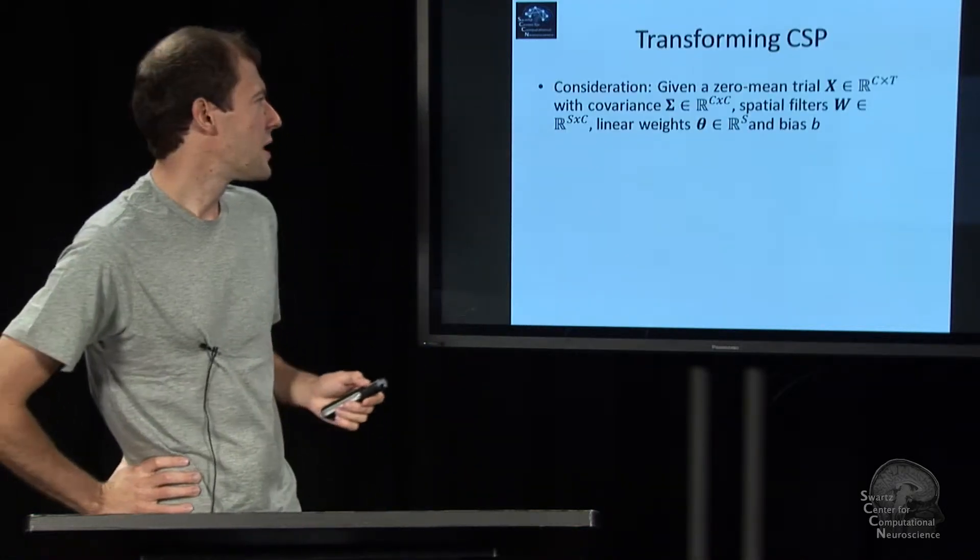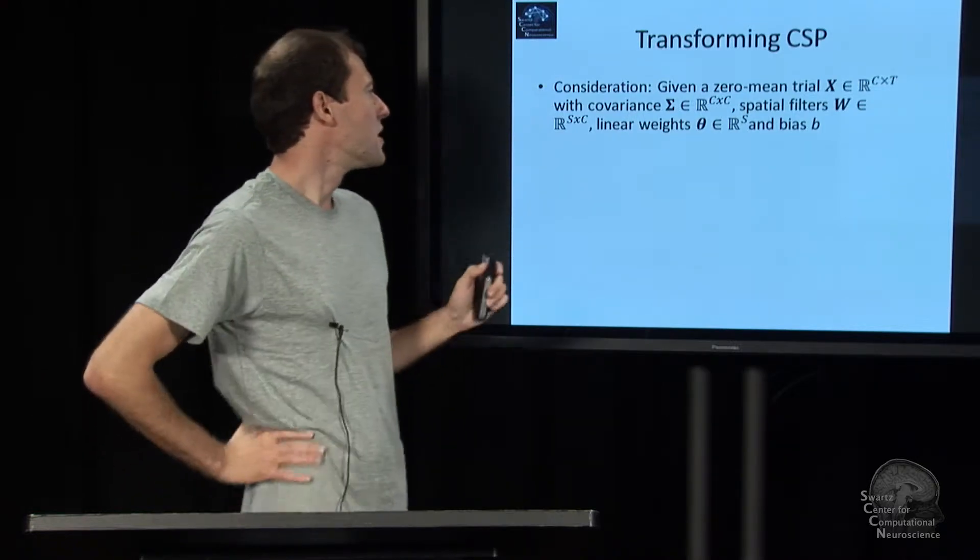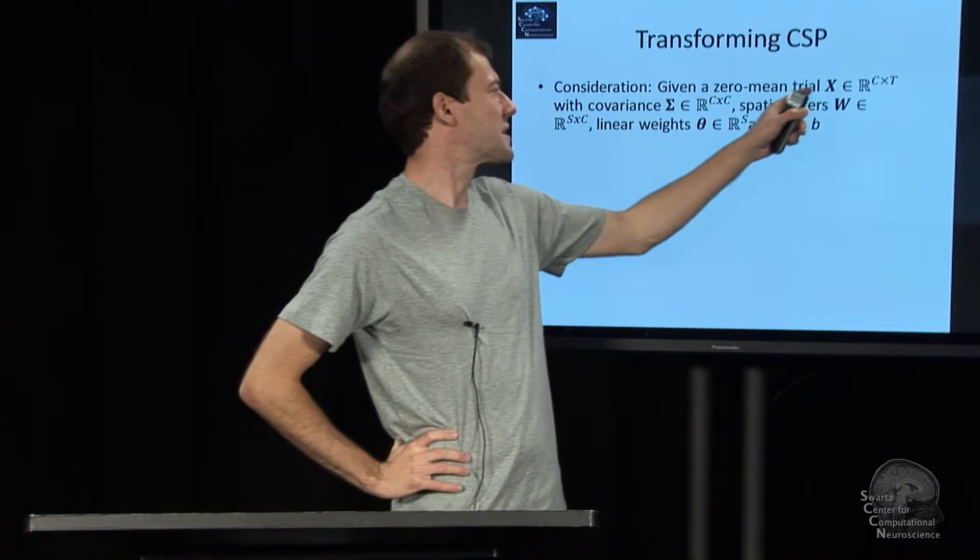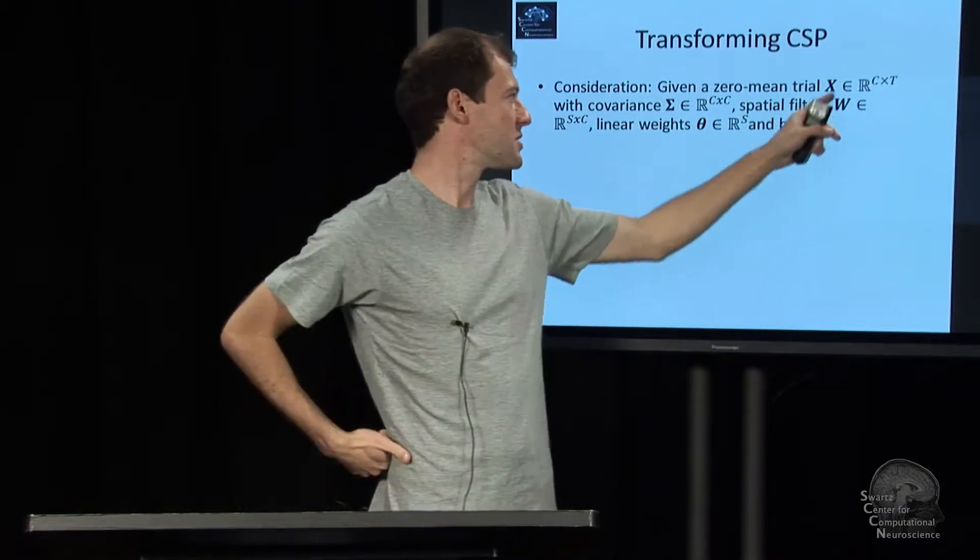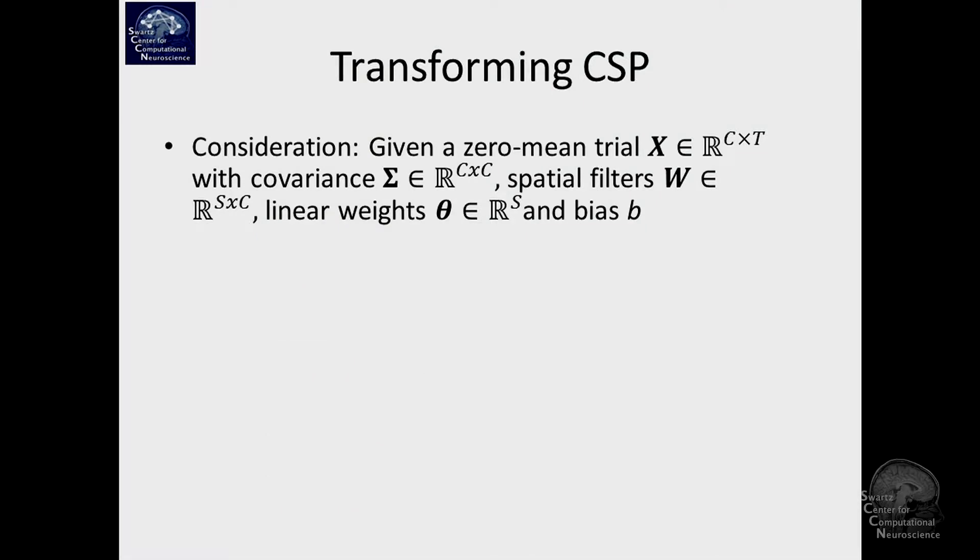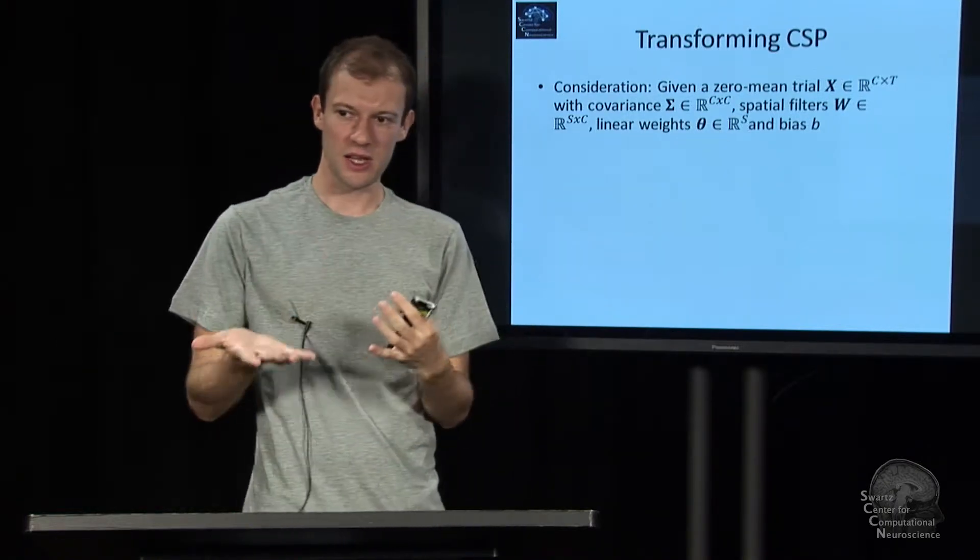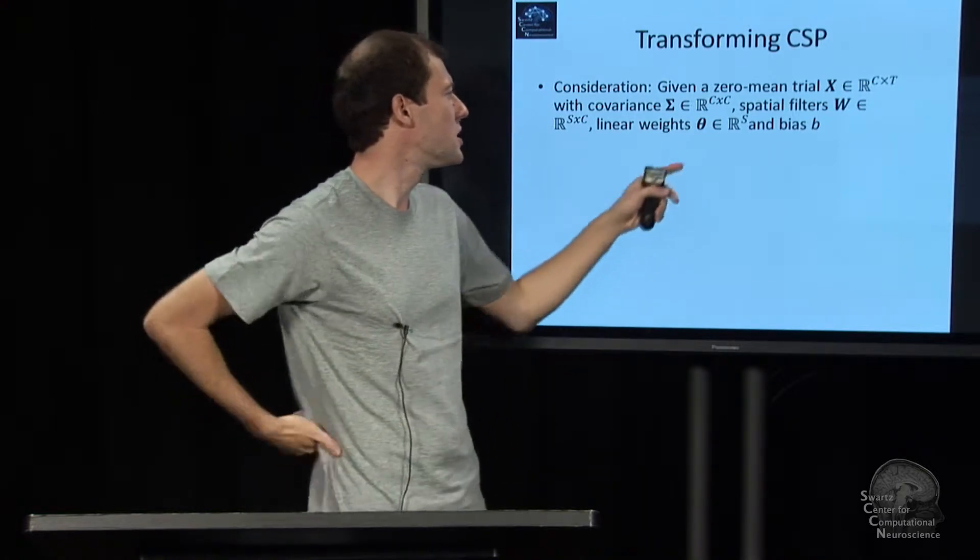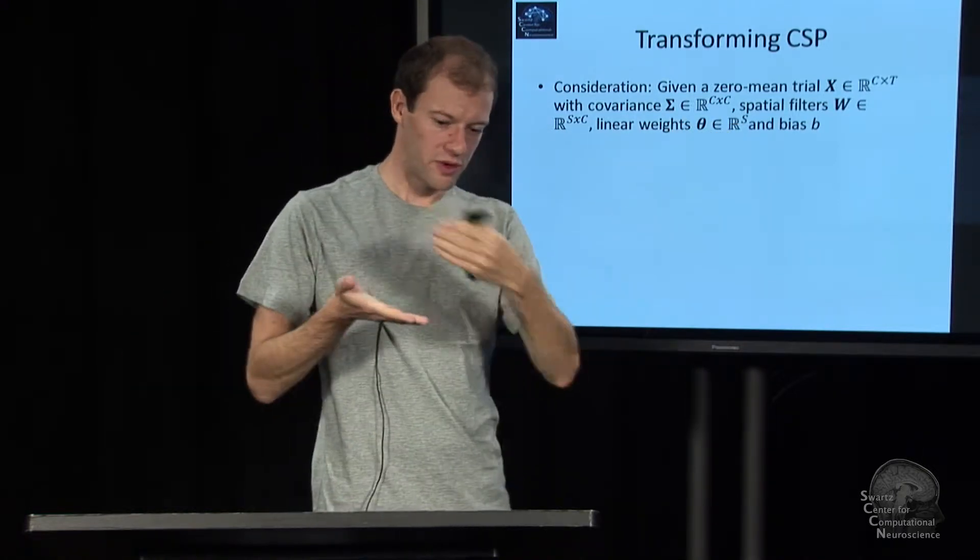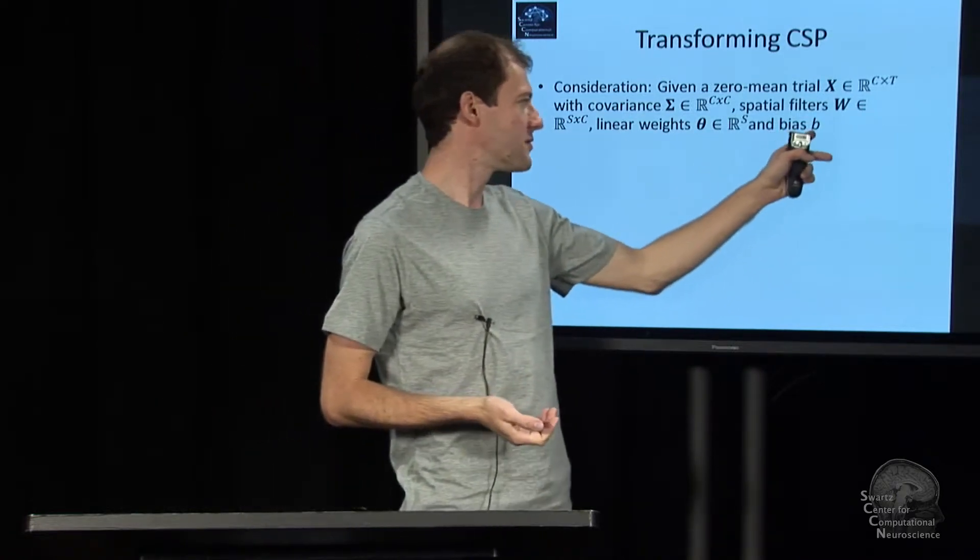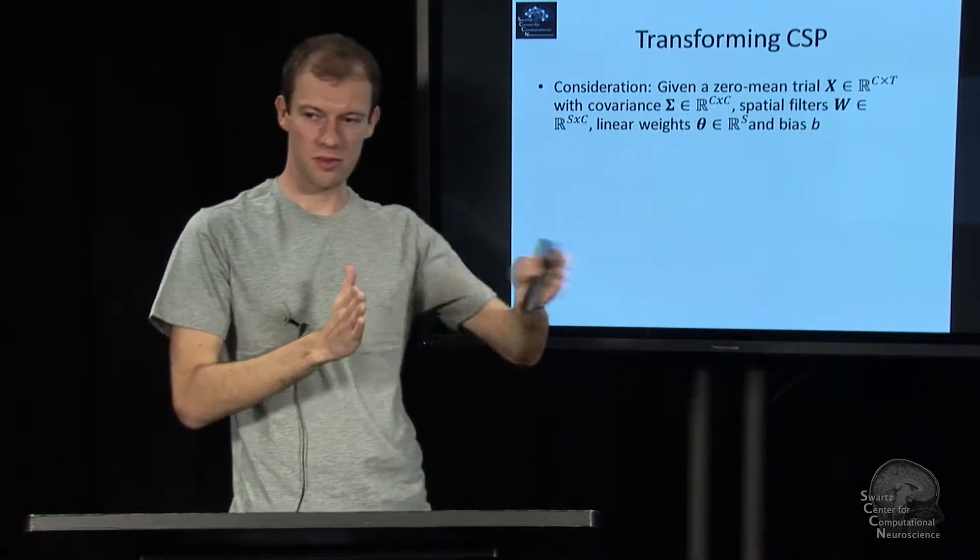It'll be a little bit mathematical, so you have to bear with me. Say we have a single trial X that's zero mean, a matrix of channels times time points. We have a covariance matrix Σ for that, which is channels by channels. We also have a matrix of spatial filters W, which is number of sources times number of channels. You have linear weights for a linear classifier like what LDA computes, θ, which is the number of spatially filtered parameters, and a bias value b, which is just a number for the bias of the hyperplane.